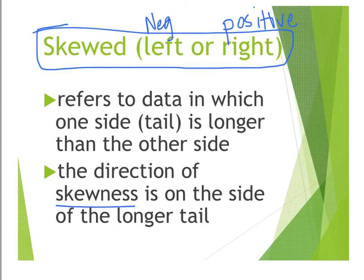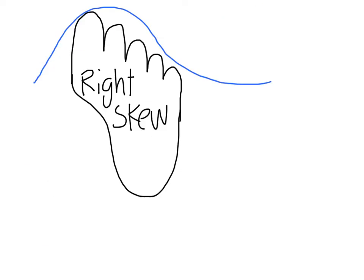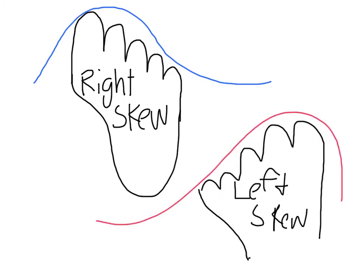Here's how you can remember right skewness: it kind of takes on the shape of the top part of your right foot. The majority of the data is in this area with some over here in the tail area. In the same fashion, this would represent left skewness, much like your left foot takes on this shape.